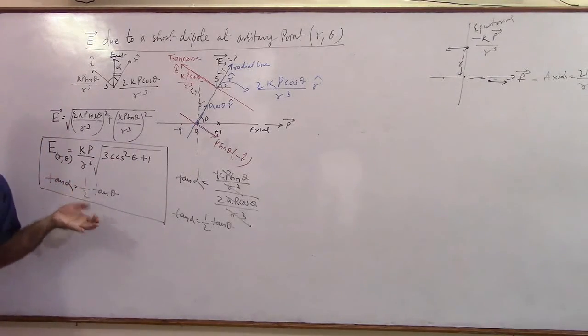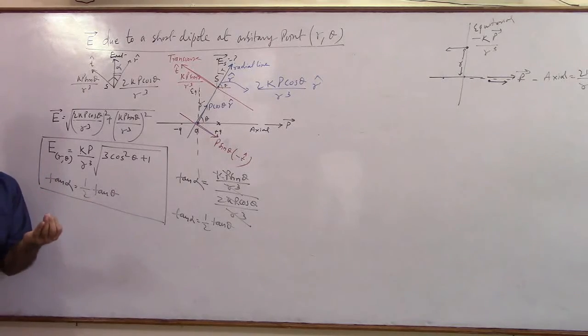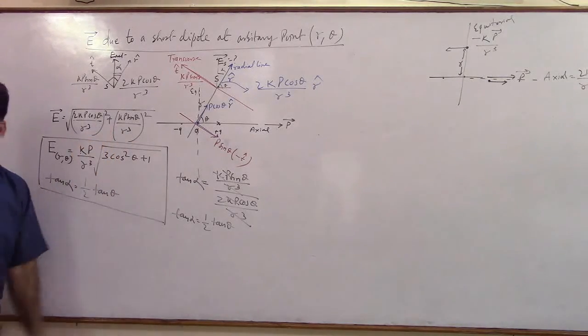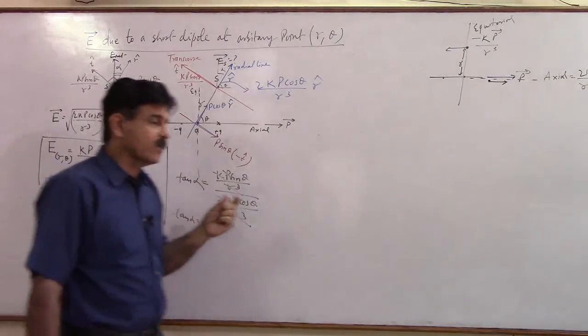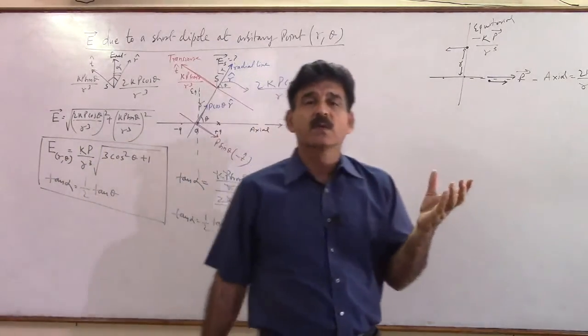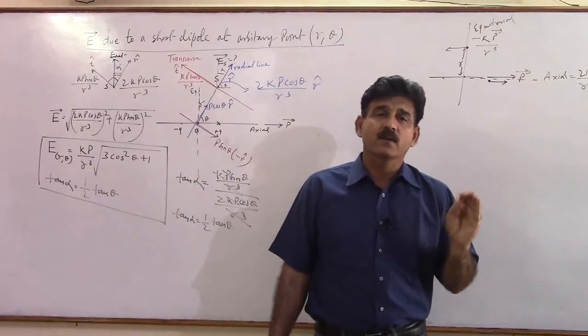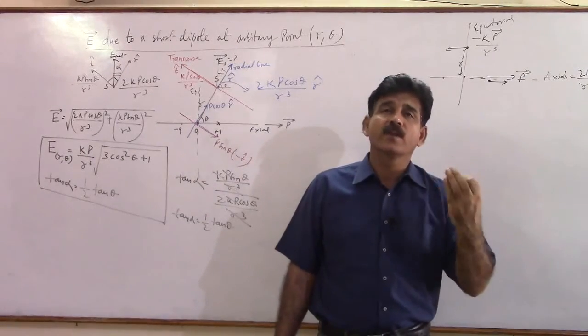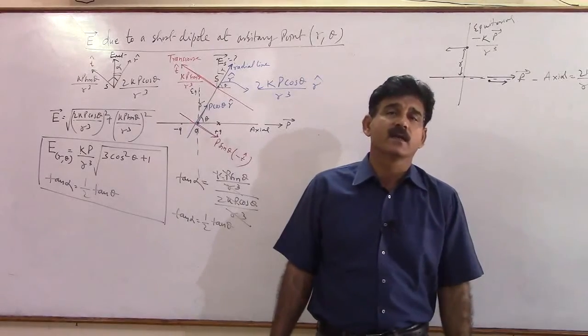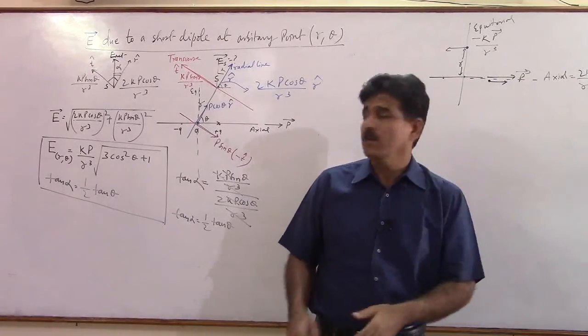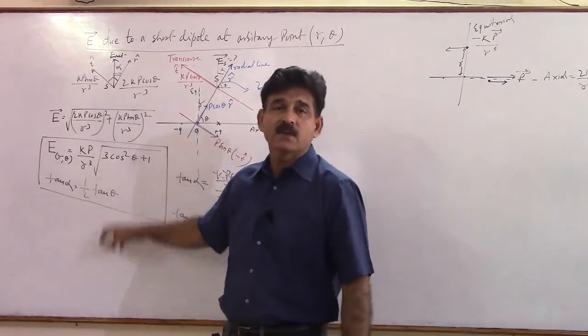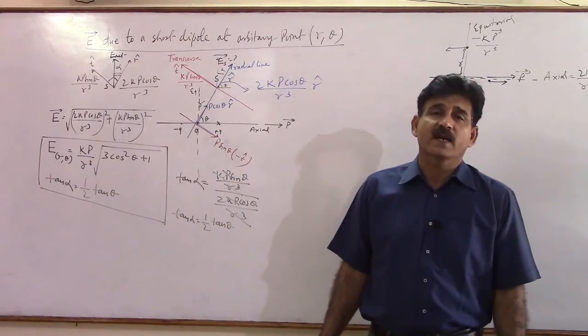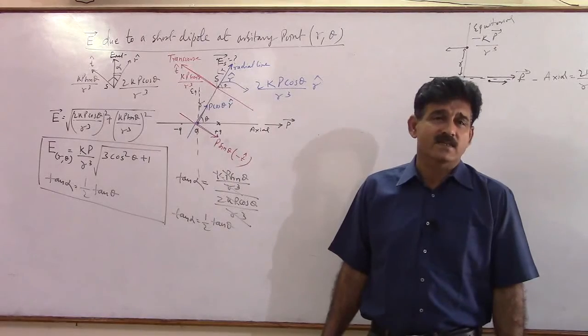So this helps you. You are capable of giving me the answer if I say a short dipole of dipole moment this much is placed in the space. Find out the magnitude and the direction of electric field at a point 2 meters located at 45 degrees. You will say come on, no problem, we can substitute the values and get the answers.